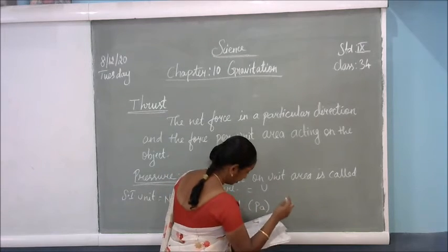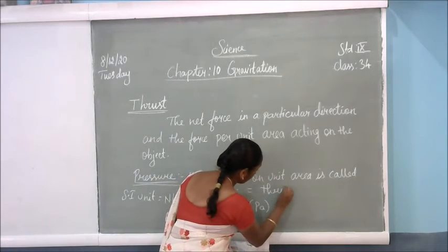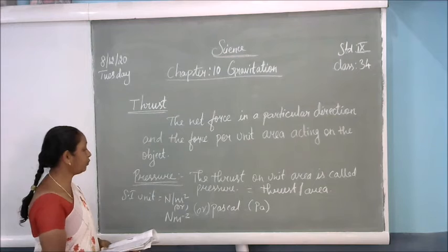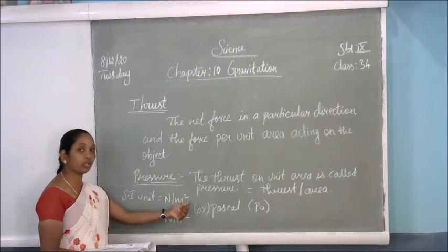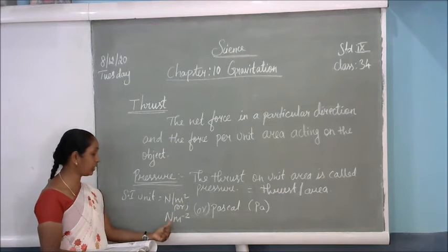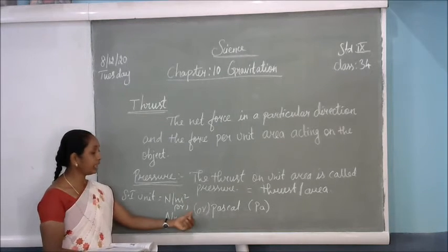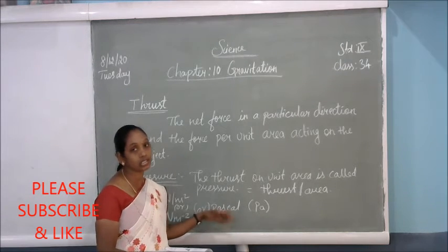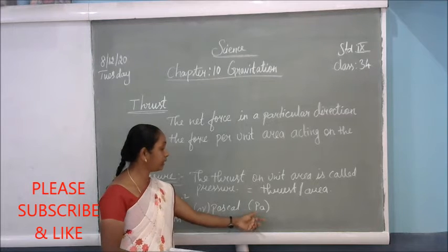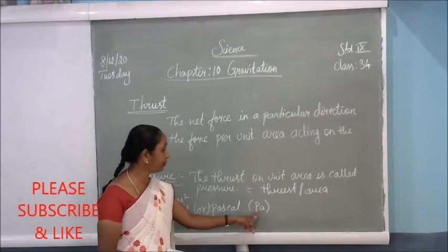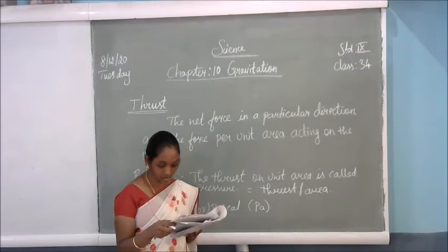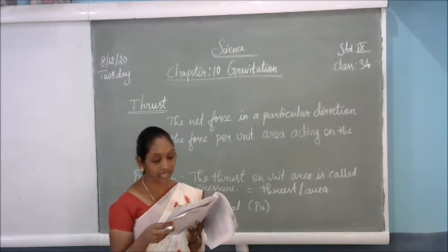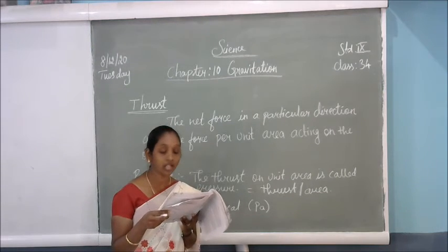Pressure is equal to thrust by area. So what is the SI unit of pressure? It is Newton per meter square, or Newton meter⁻². Another SI unit is Pascal. Pascal is a scientist's name — in honor of the scientist, they have kept the name Pascal. The unit of pressure is called Pascal, denoted as Pa.